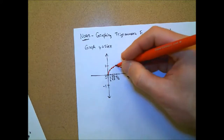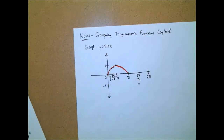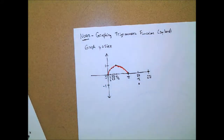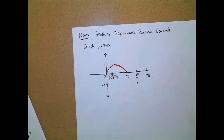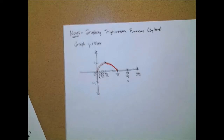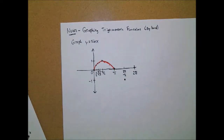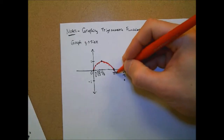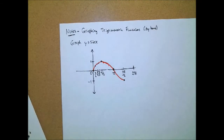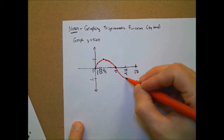Between pi and three pi over two, we're in quadrant three on the unit circle — and sine is negative there, so we're going to see negative values going downward. Then in quadrant four, which on the unit circle is between three pi over two and two pi, we again have negative sine values, and we go right back up to zero.